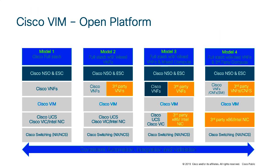To deploy Cisco VIM next to these different pod types, we also have different ways of deploying the entire stack, because having OpenStack alone is not enough. We need tooling in the ecosystem to make everything work — it's not just the telco cloud platform that needs to be automated. Model 1, as we call it, is basically everything in Cisco VIM: the hardware, the software, the different VNFs, the automation in the form of the VNF manager, ESC, and the NFV orchestrator in the form of NSO.